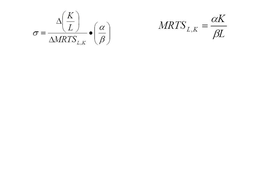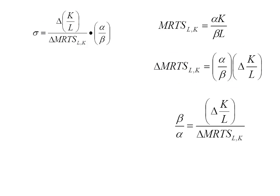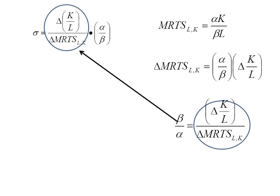I've simplified it quite a bit, but we can go further. In the left-hand equation I have delta MRTS, and I can manipulate the MRTS expression on the right to find that delta MRTS equals alpha over beta times delta K/L. From this I can find that delta K/L over delta MRTS equals beta over alpha. Plugging that in, sigma is now beta over alpha times alpha over beta — the alphas cancel, the betas cancel, and I get sigma equals 1.